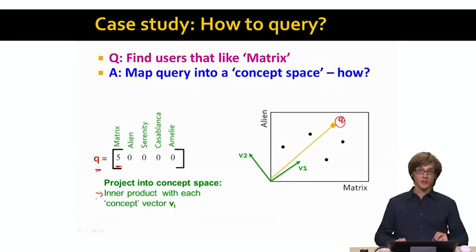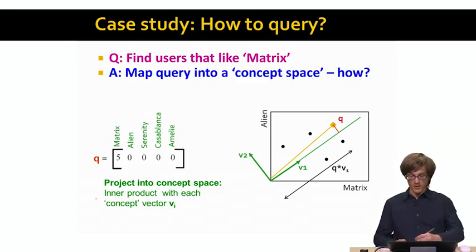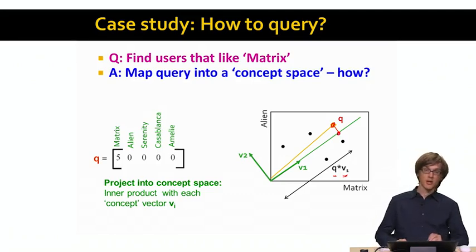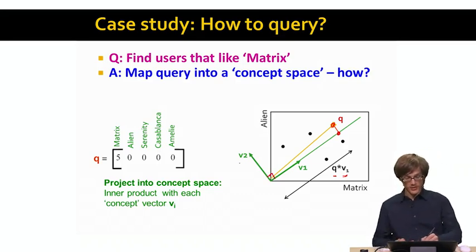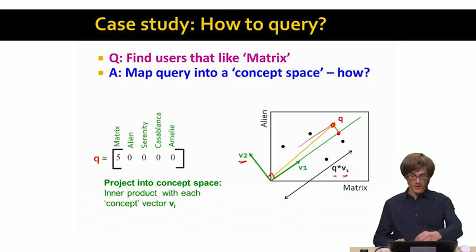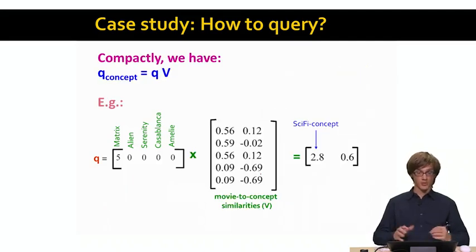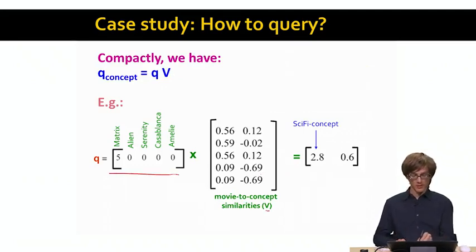Vector V is the movies-to-concepts vector. The way we project into concept space is by taking the inner product of our query point with each concept vector in V. Why is taking the inner product a good idea? Because Q times the first singular vector takes our position of point Q and tells us its location along the axis of the first singular vector. The second singular vector is orthogonal to the first one, and when we multiply Q times V2, we get the projection of the data point and its position on the second singular vector. So we take our vector Q and multiply it with matrix V.